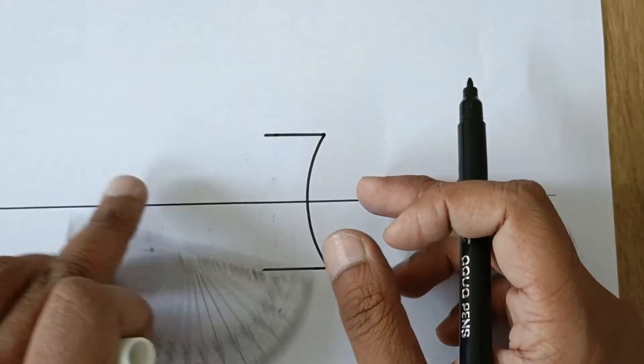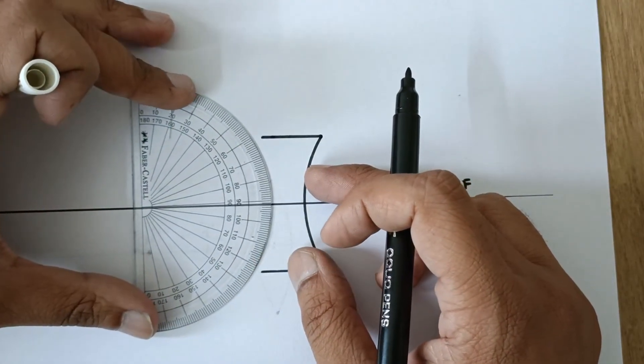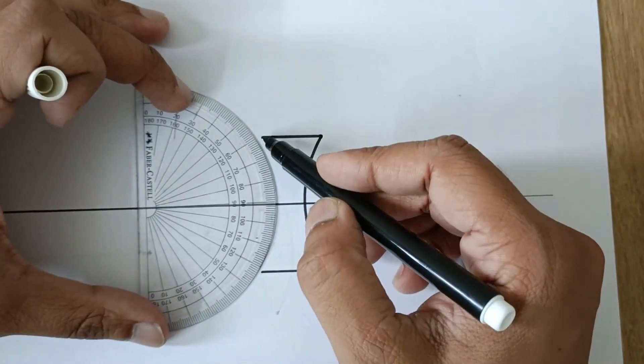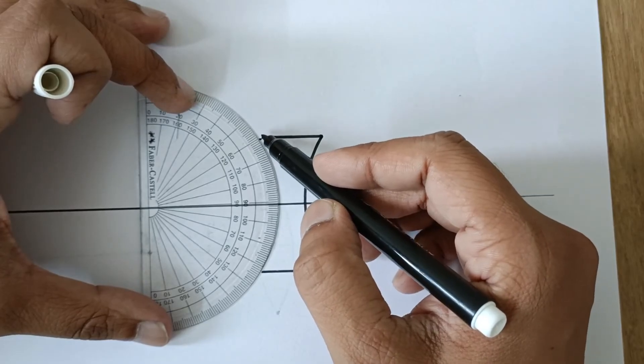Okay, now again put the protractor back. The 90 degrees line should be coinciding, and then you are supposed to join these two very carefully. All right.